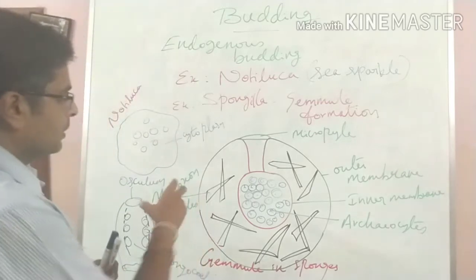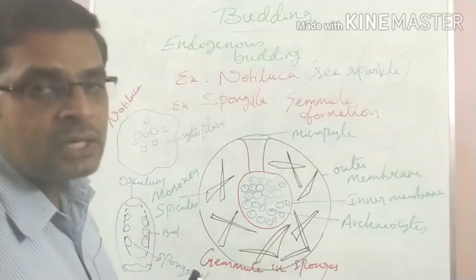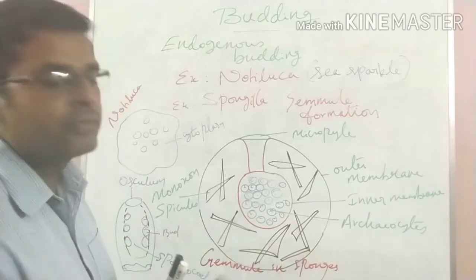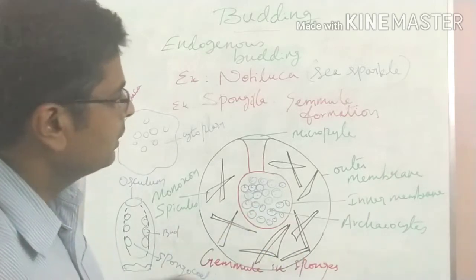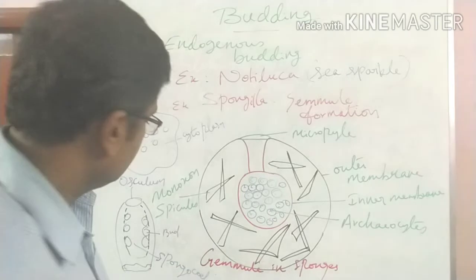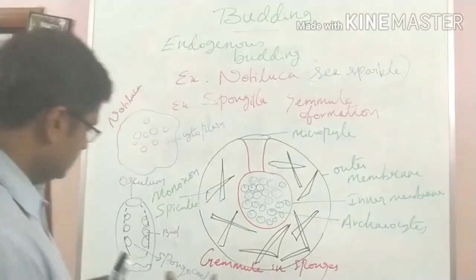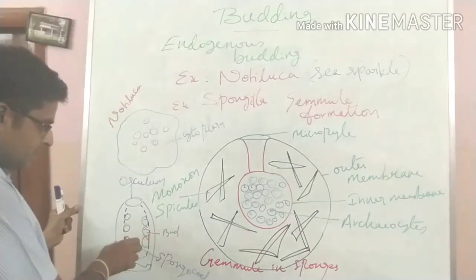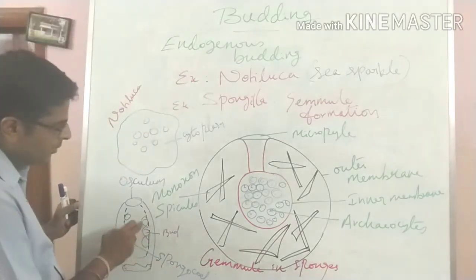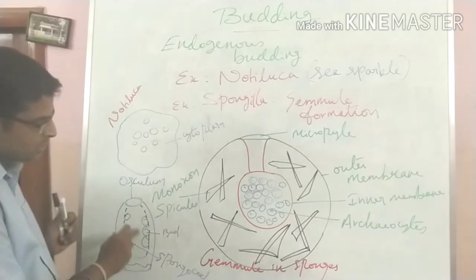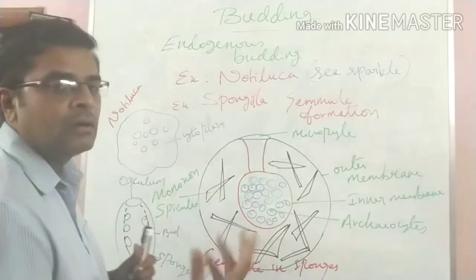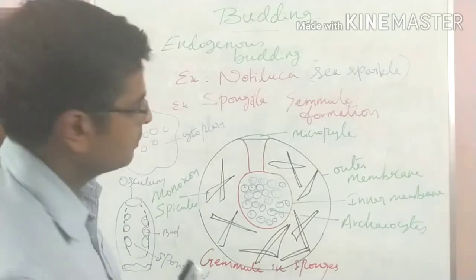Some freshwater and marine sponges undergo a special mode of asexual reproduction called internal bud formation, also called gemmule formation. Here, inside the parent body, internal buds are formed in the cavity of the sponge. These internal buds are called gemmules.